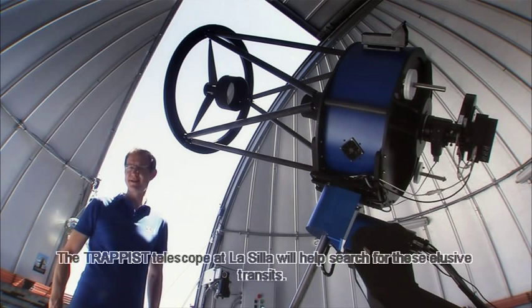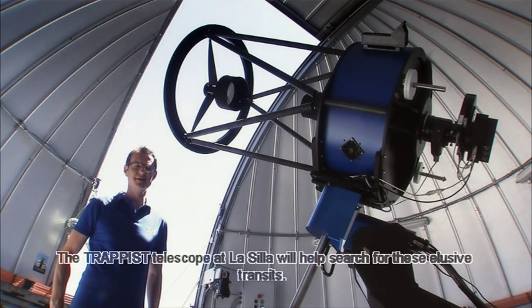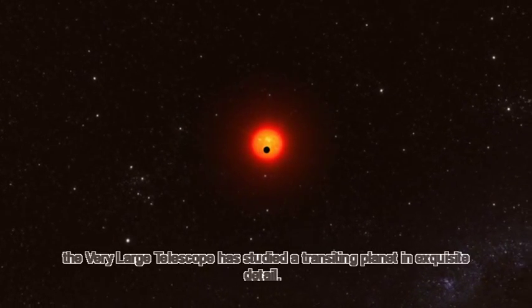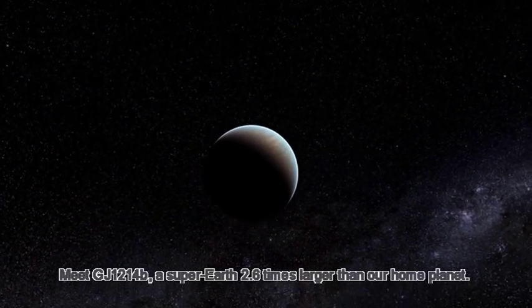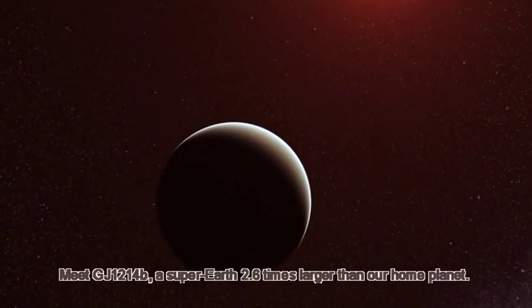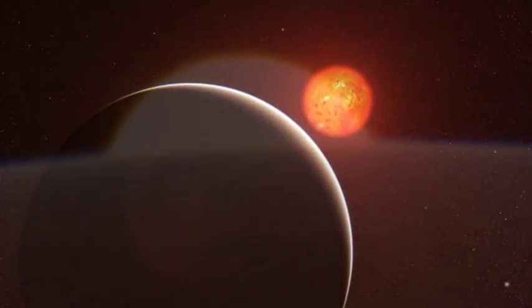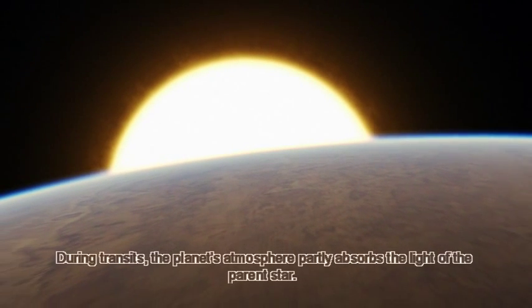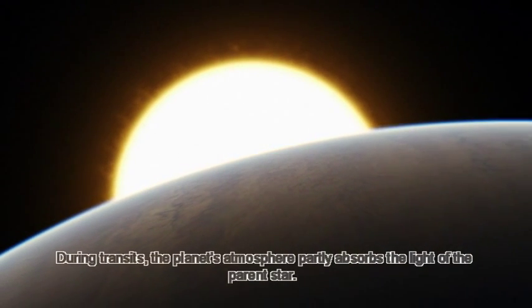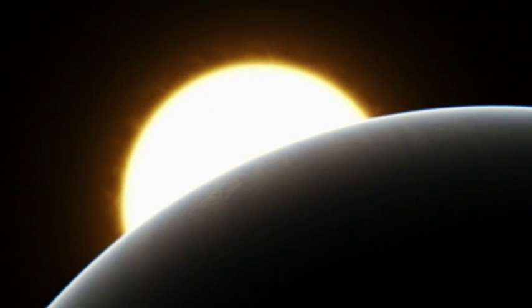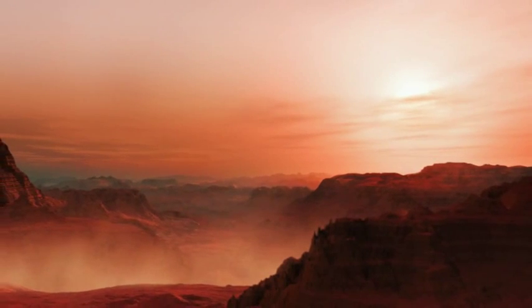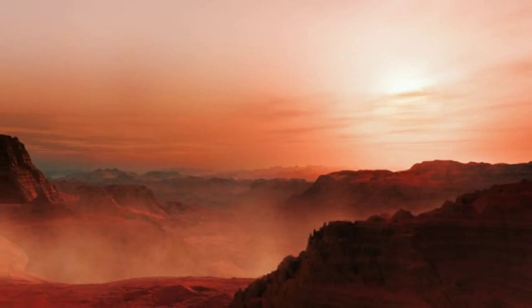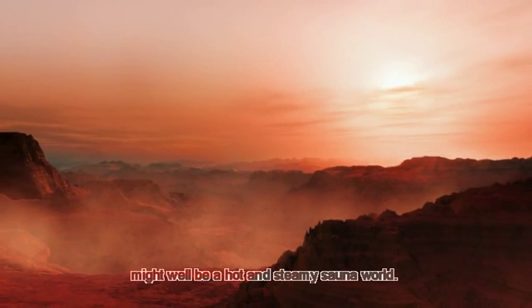The Trappist telescope at La Silla will help search for these elusive transits. Meanwhile, the Very Large Telescope has studied a transiting planet in exquisite detail. Meet GJ 1214b, a super-Earth 2.6 times larger than our home planet. During transits, the planet's atmosphere partly absorbs the light of the parent star. ESO's spectrograph revealed that GJ 1214b might well be a hot and steamy sauna world.